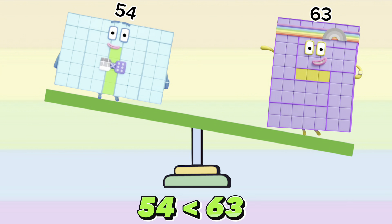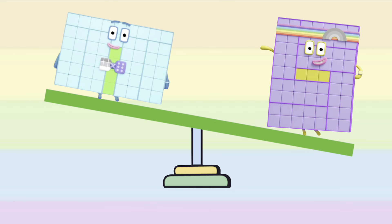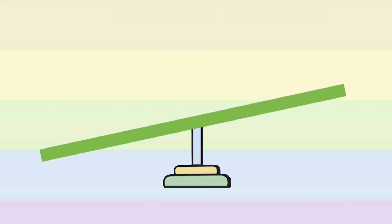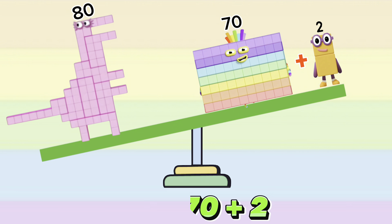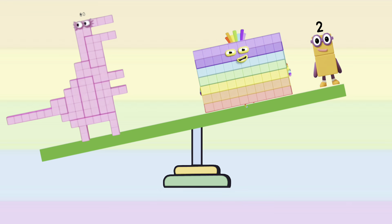54 is less than 63. 80 is greater than 70 plus 2, or 80 is greater than 72.